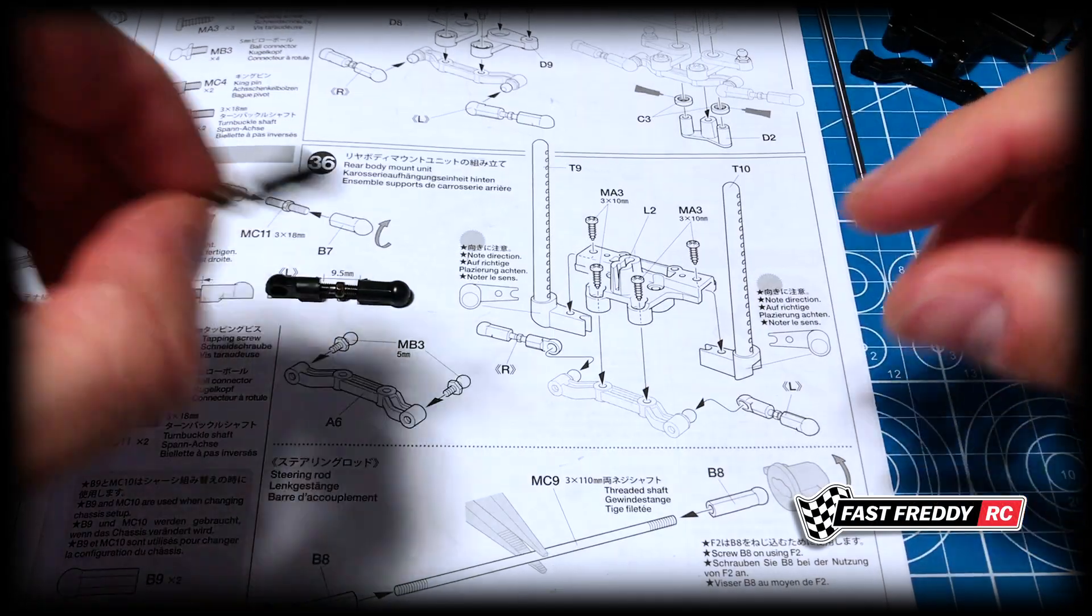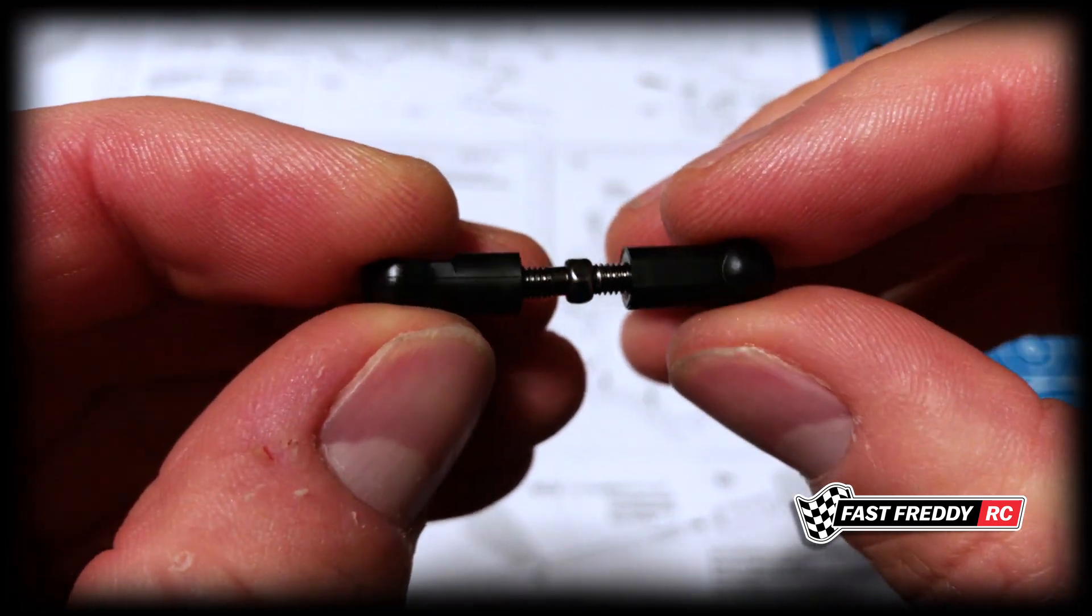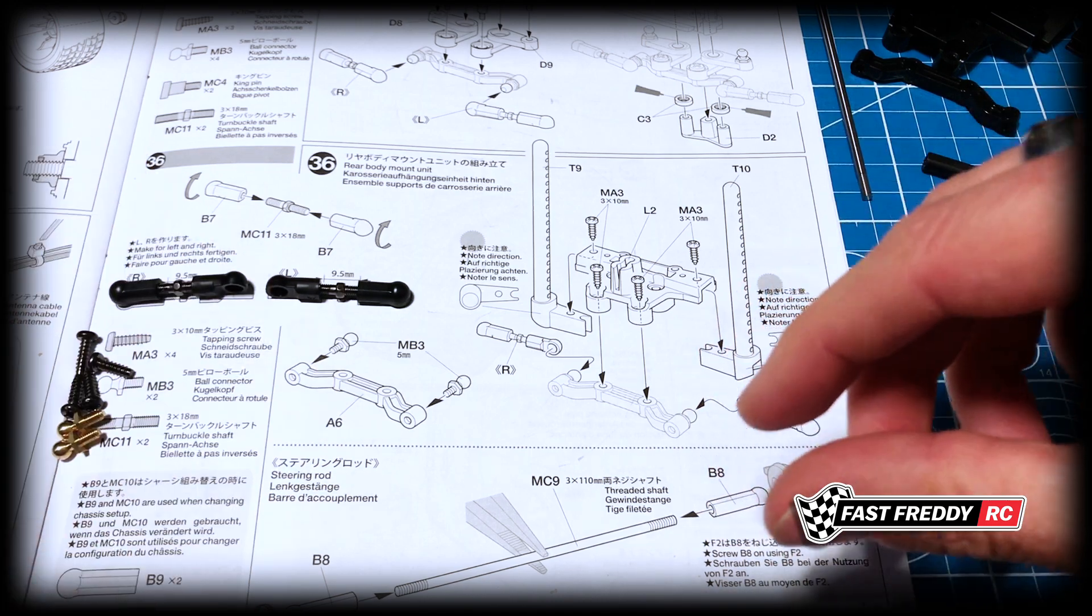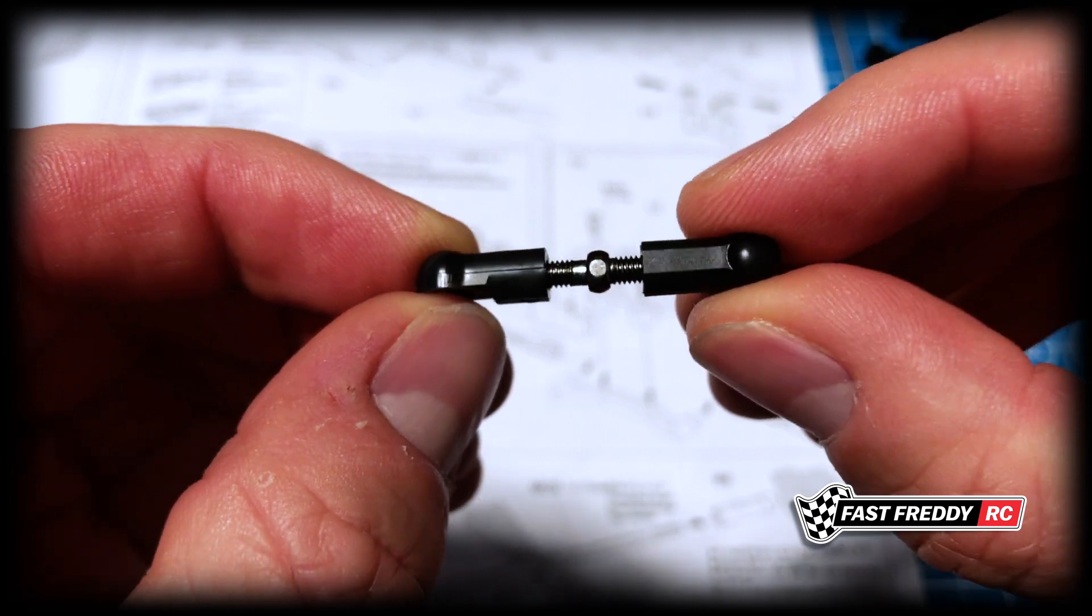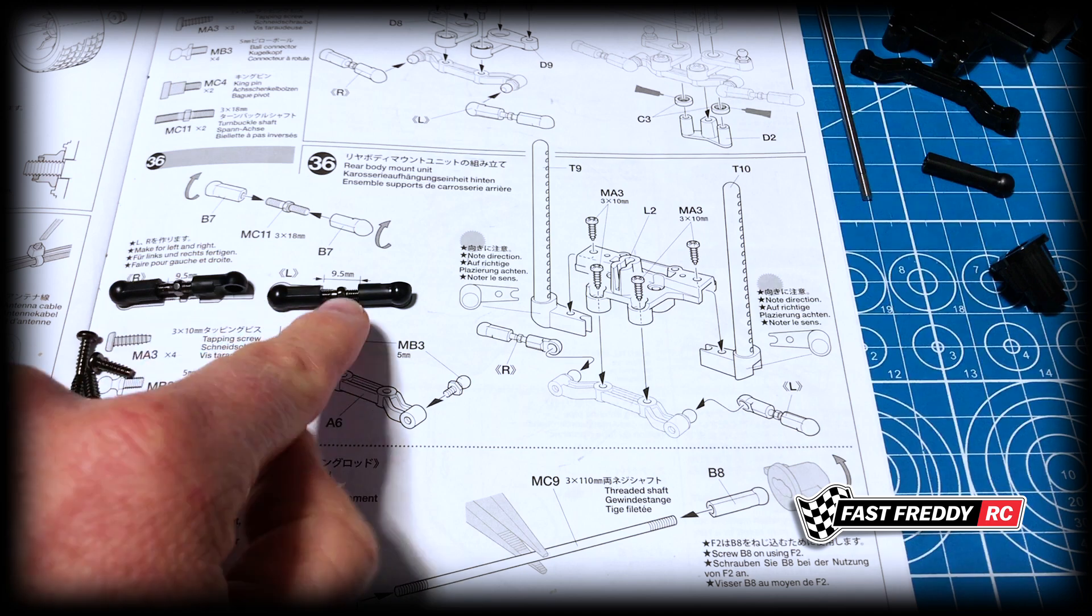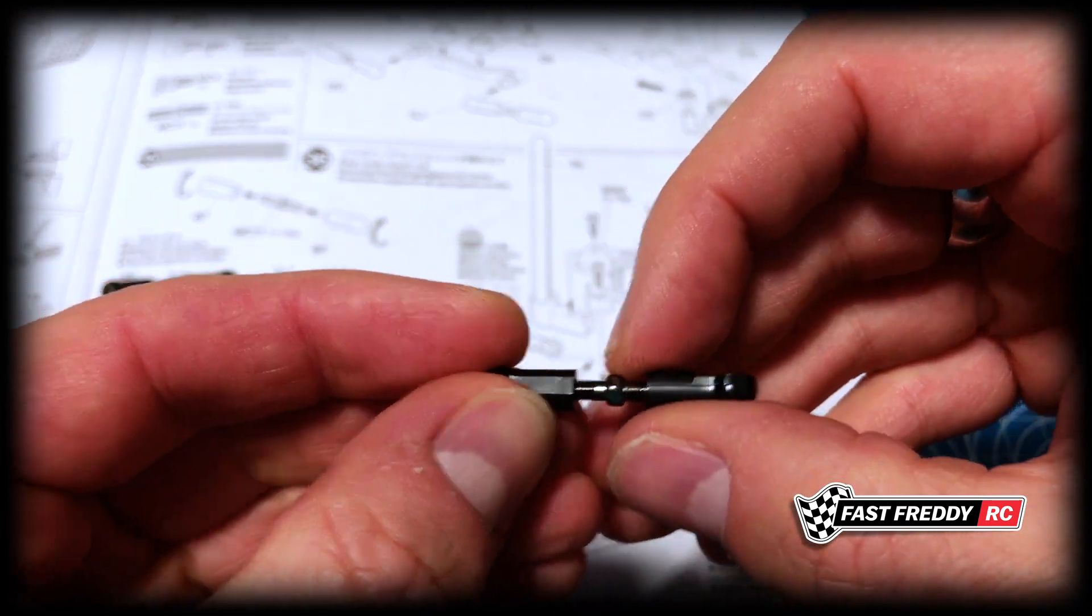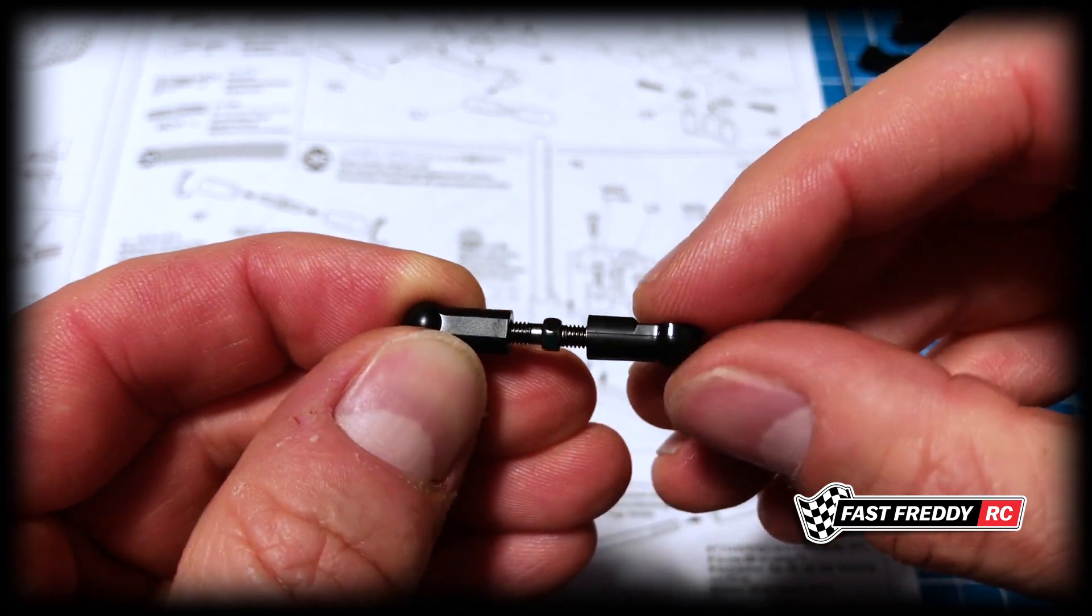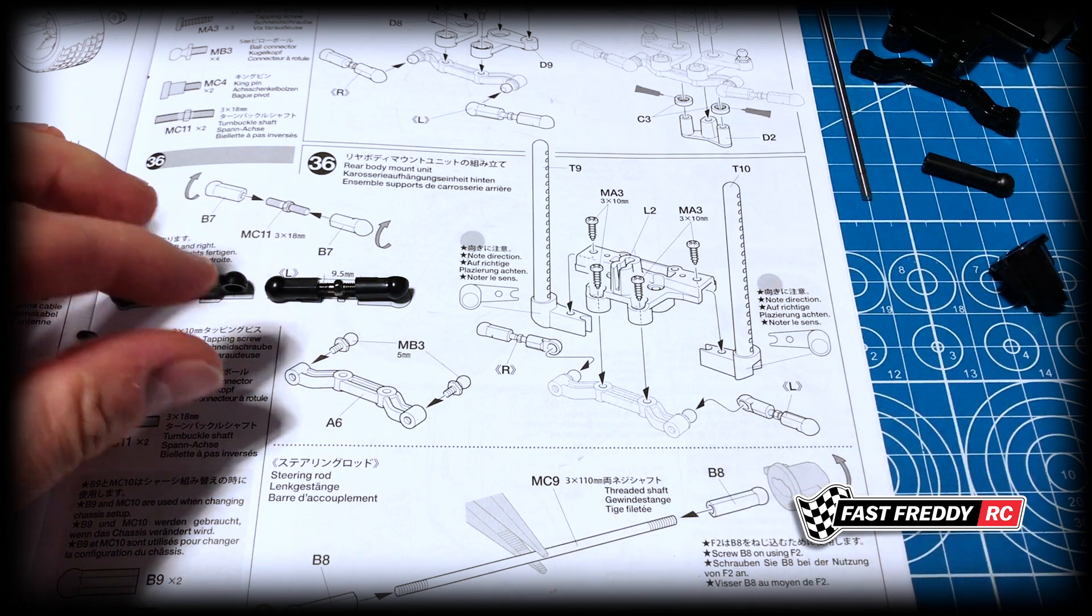Here are the arms. I went ahead and screwed them on. Again, a bit finicky, took a while, and if you want to see how these went on, go to the previous step. The difference was in step 35 the distance between the two ends was 11 and a half. For the rear they're nine and a half millimeters, which is interesting.